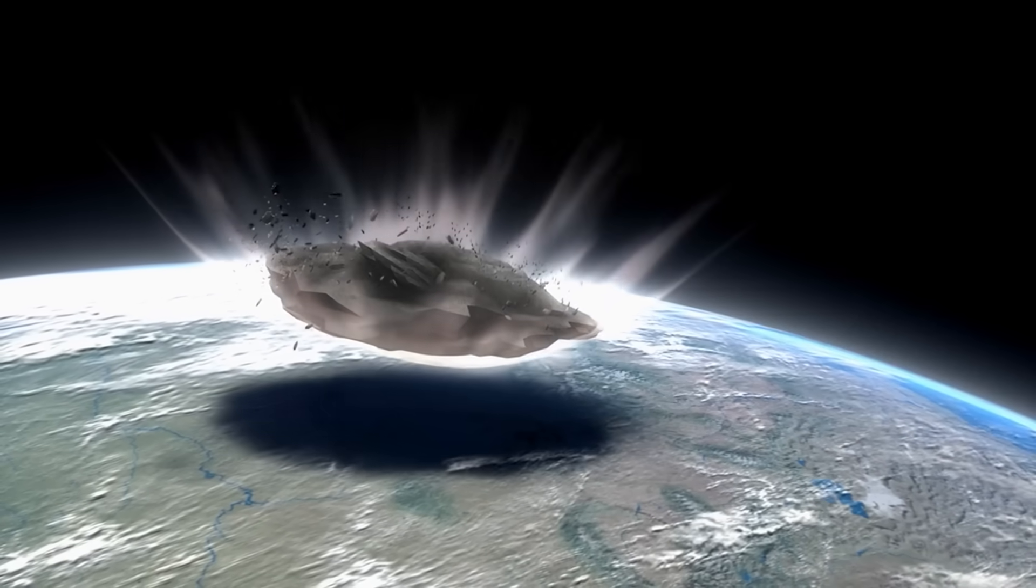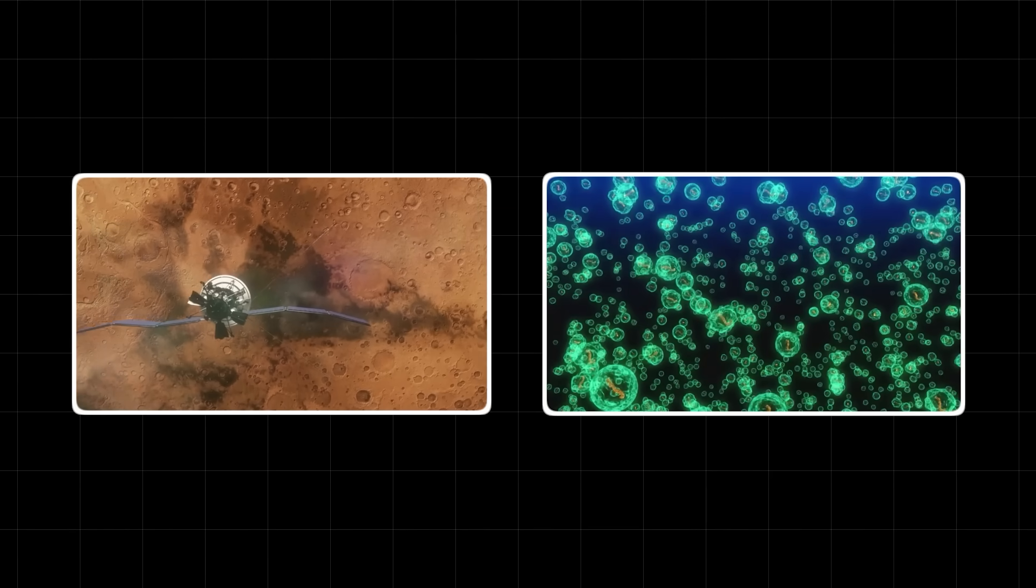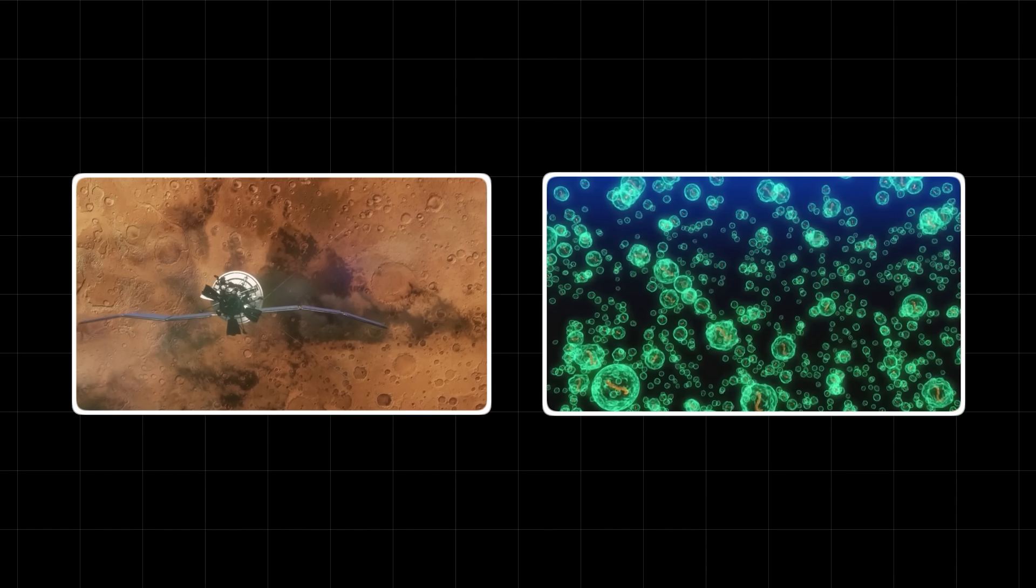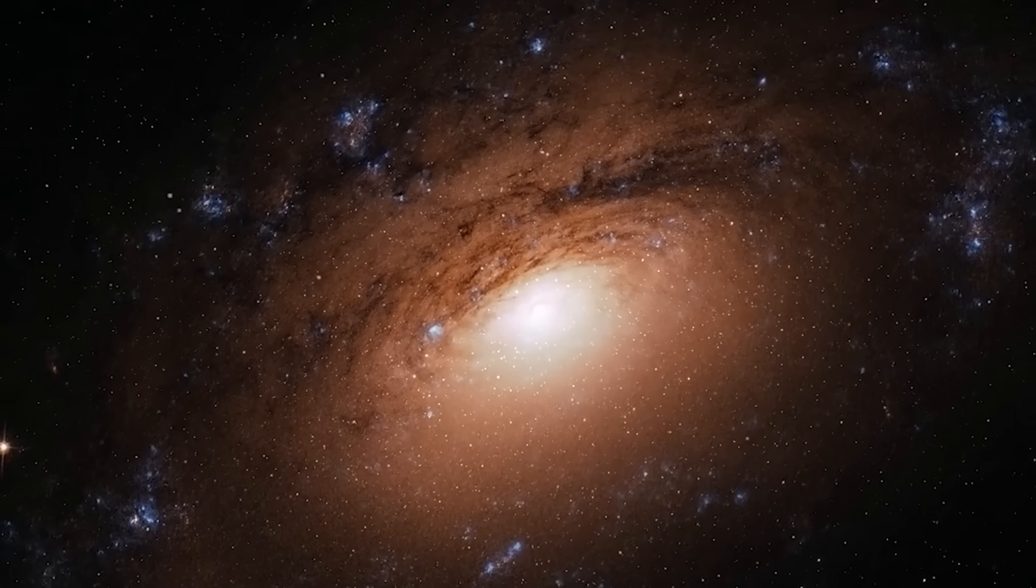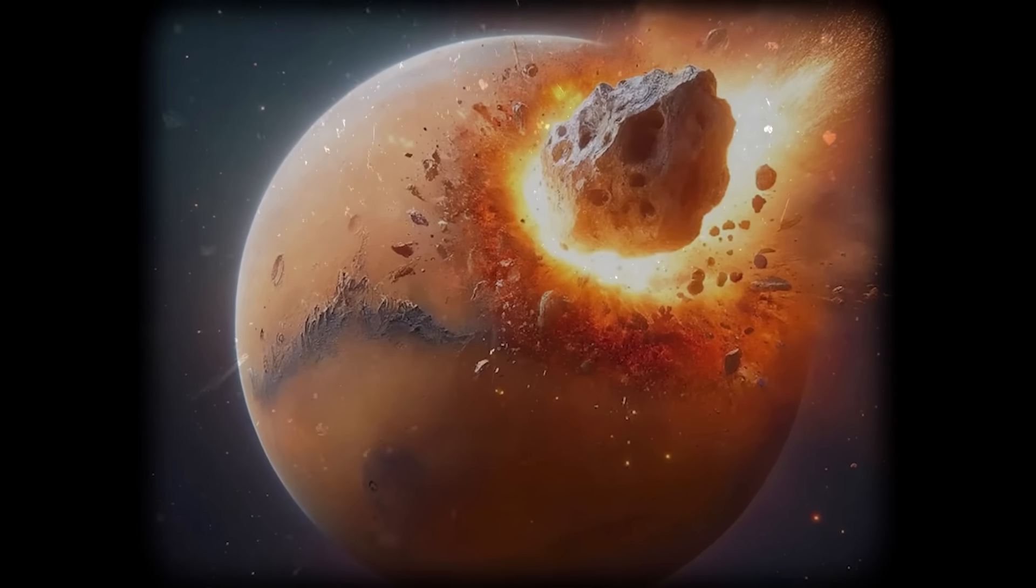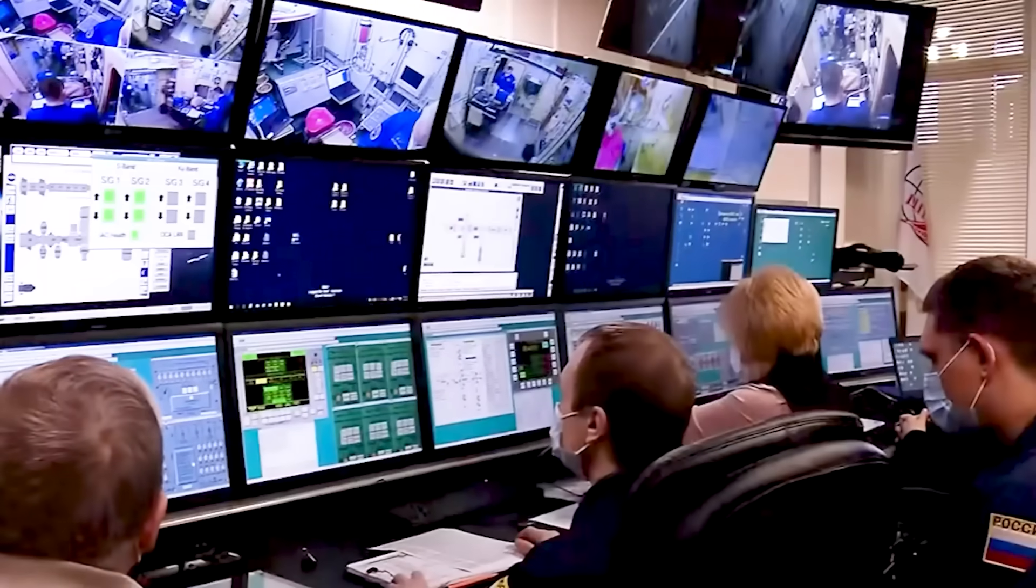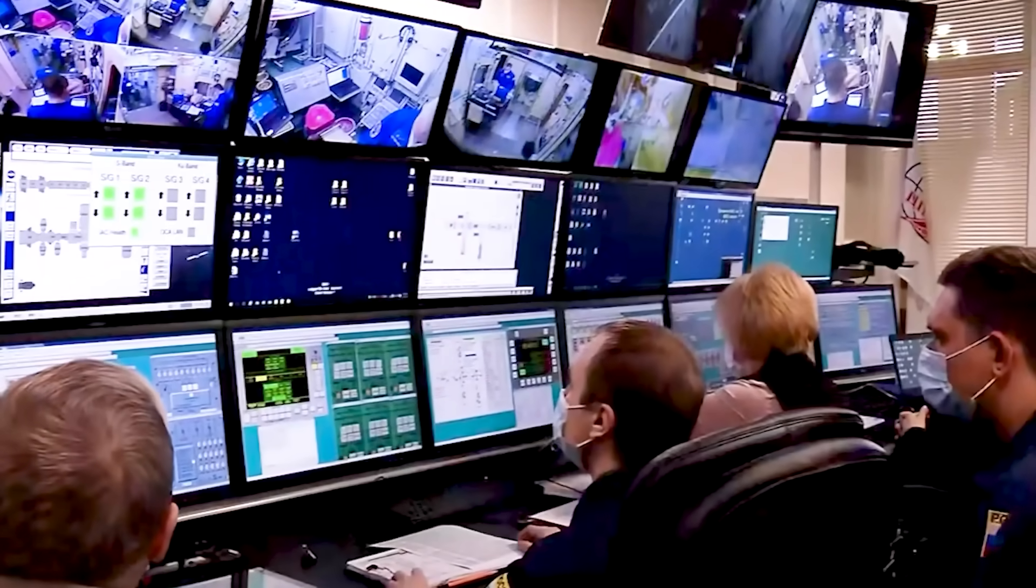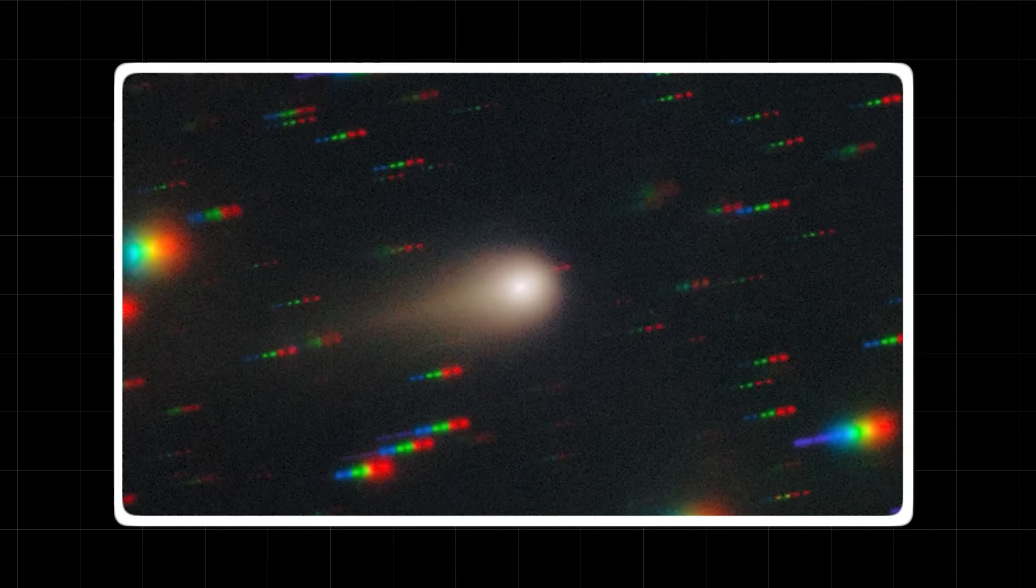The thing is, the threat of 3i Atlas is not just about the potential destruction of a planet, it is also about the potential loss of knowledge. If there is life on Mars, even if it is just microbial, it would be the most profound discovery in the history of science. It would prove that we are not alone in the universe, that the spark of life is not unique to our own world. But a collision with 3i Atlas would destroy any evidence of that life, erasing it from the cosmic record forever. We would be left with nothing but questions, a tantalizing glimpse of what might have been. It would be a tragedy of cosmic proportions, a loss that we could never recover from.